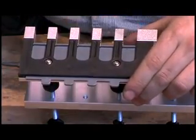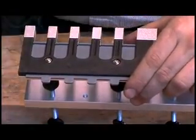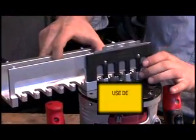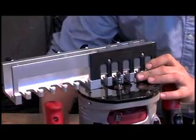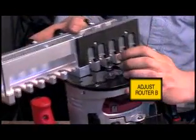The jig has a depth adjustment plate. This can be used to set the height of your dovetail bit in your router. So we're going to set the depth plate to one half inch, which is the height of our cutting bit.